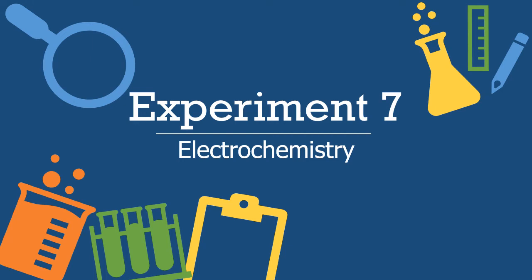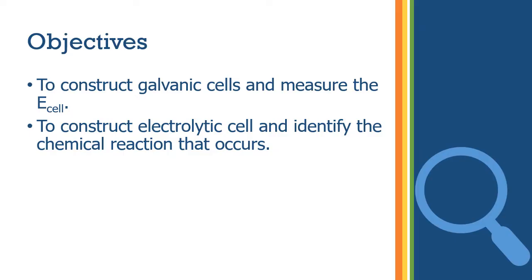Experiment number seven on electrochemistry. The objectives are to construct galvanic cells and measure the E-cell, and to construct electrolytic cells and identify chemical reactions that occur on both electrodes.